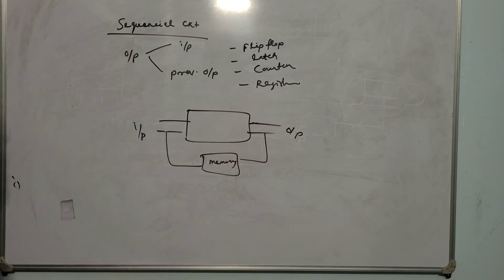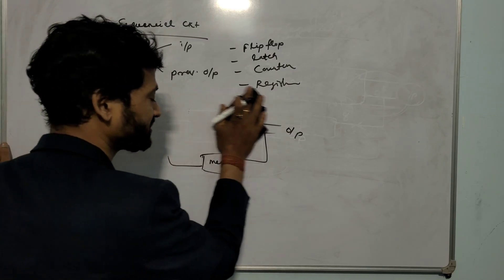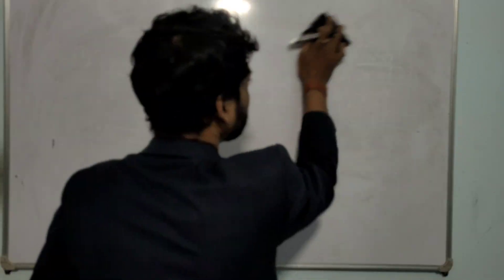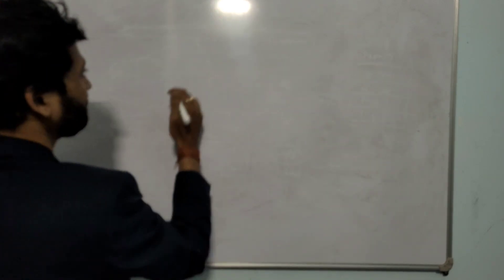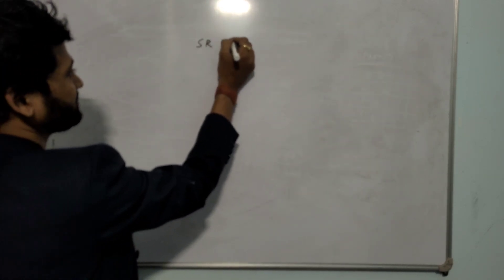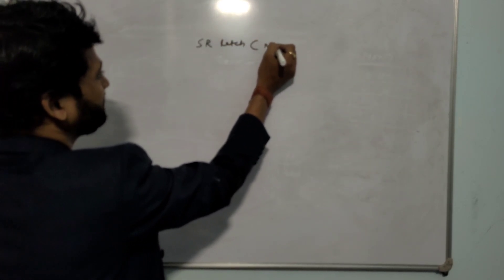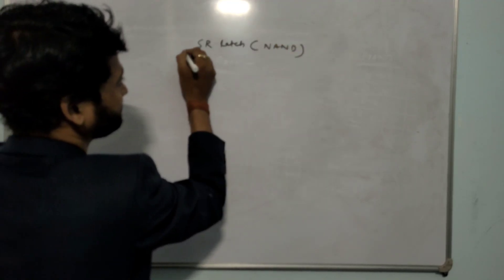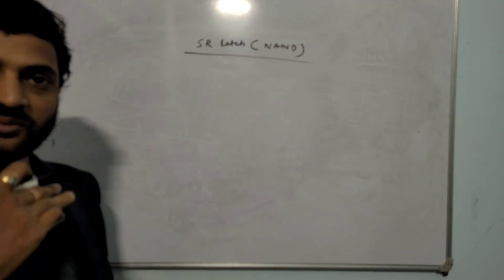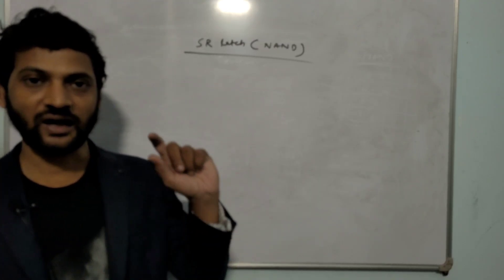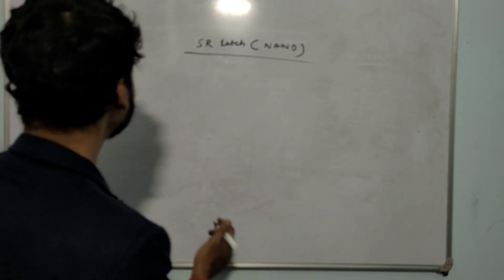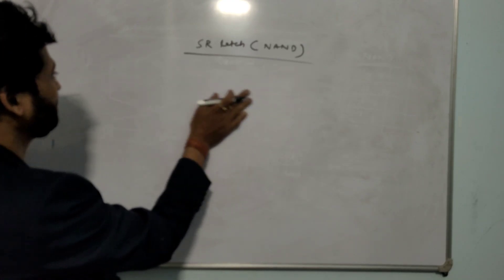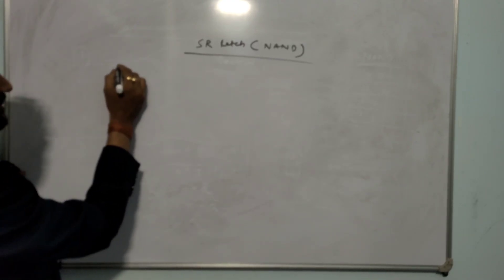So the overall idea is the difference between sequential circuit and combinational circuit. Now we will discuss SR latch — how it works. SR latch using NAND gates. It is a sequential circuit whose output depends on the input and the previous output. Let me draw the circuit diagram.